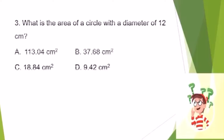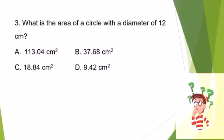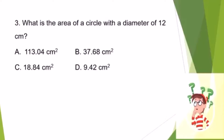Number 3. What is the area of a circle with a diameter of 12 centimeters? A. 113 and 400ths square centimeters? B. 37 and 68 hundredths square centimeters? C. 18 and 8400ths square centimeters? Or D. 9 and 4200ths square centimeters? The correct answer is letter A.